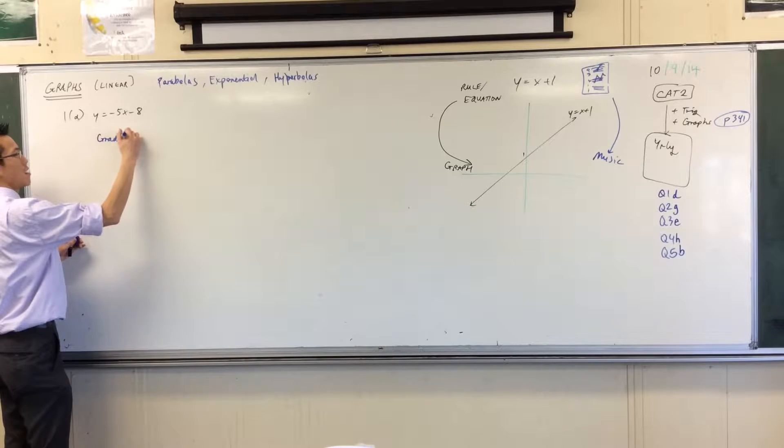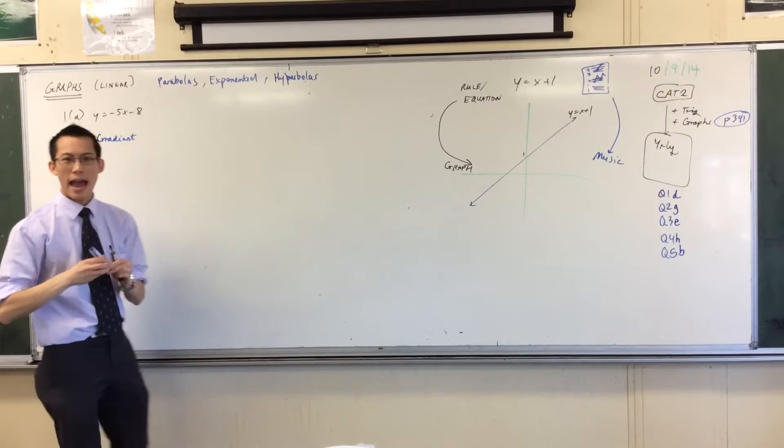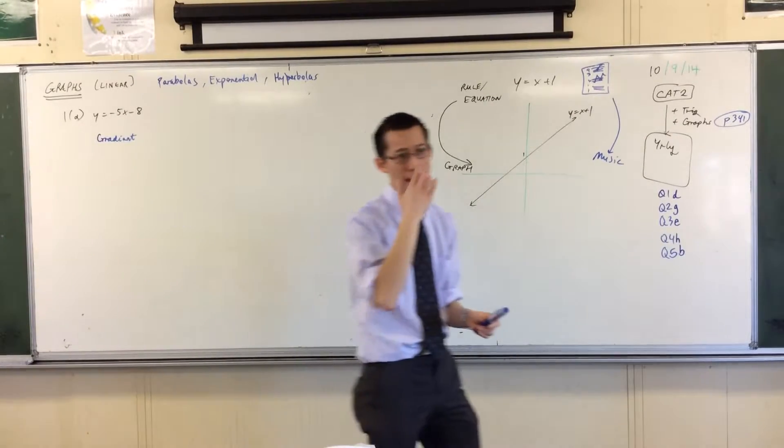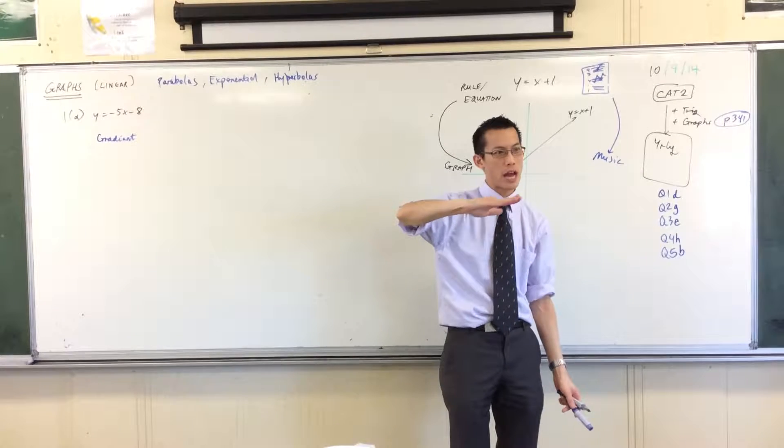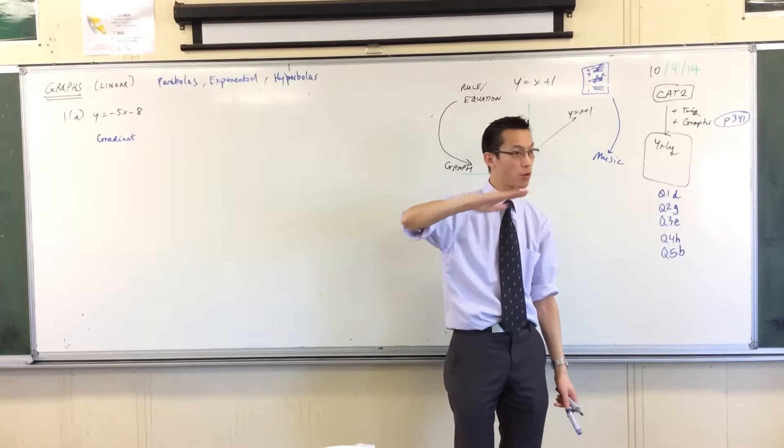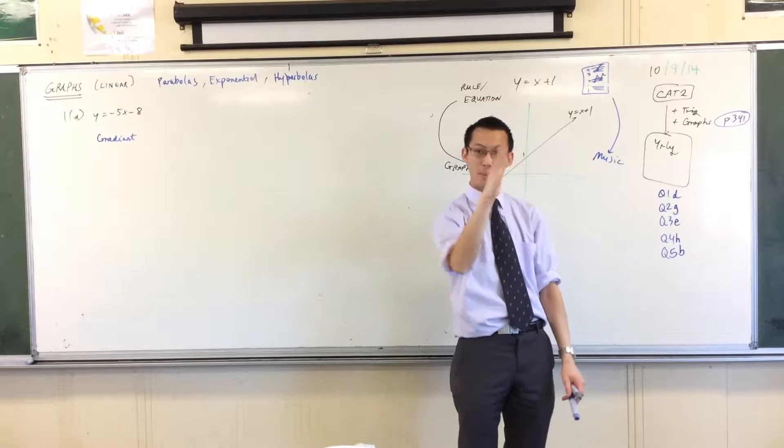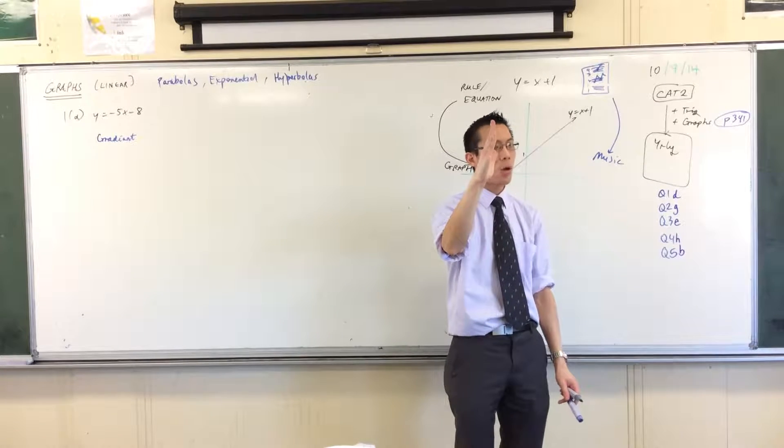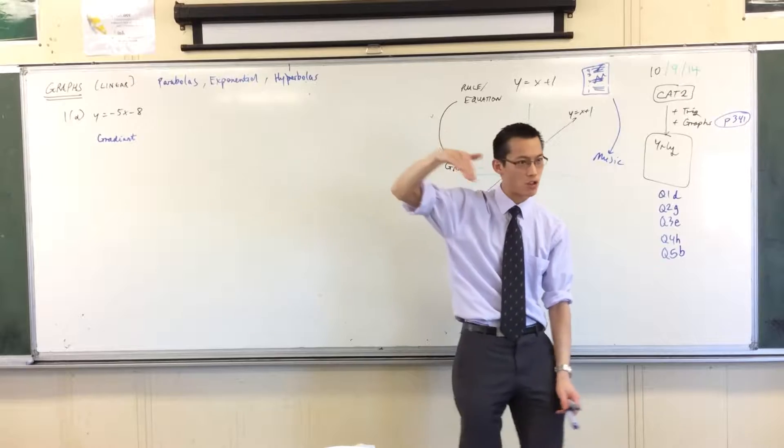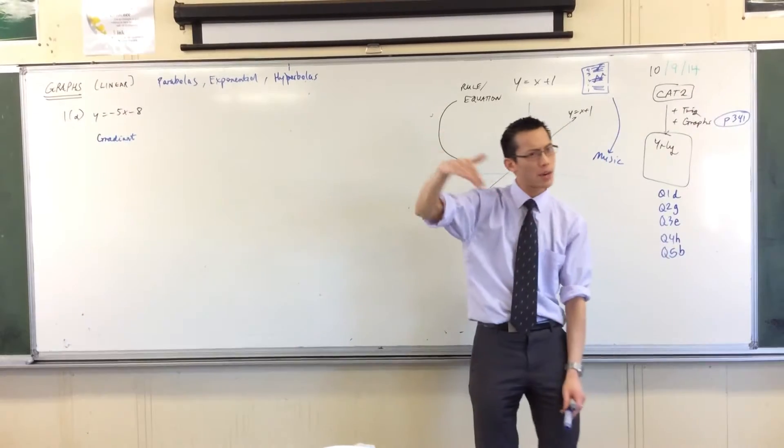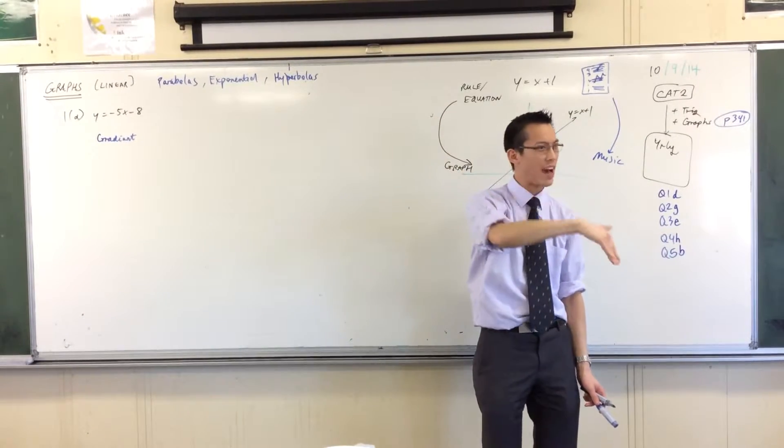Gradient is about how steep a line is. So picture a hill. If it's just a gentle hill, up you go, it would have a gentle, low gradient. And if it was a steeper hill, it would have a higher gradient. What if it was downhill? We'd have a negative gradient because it's dropping down, right? It's about rise over run, but you're not rising, you're going down.